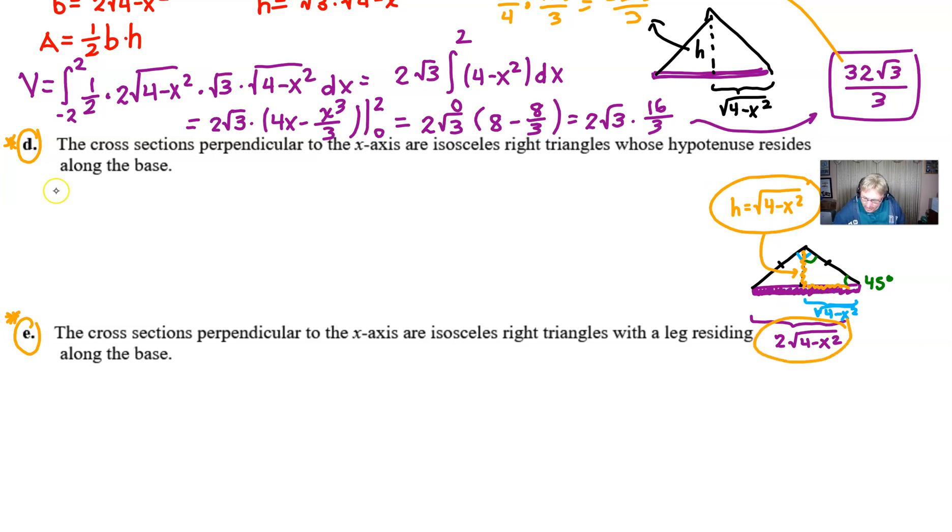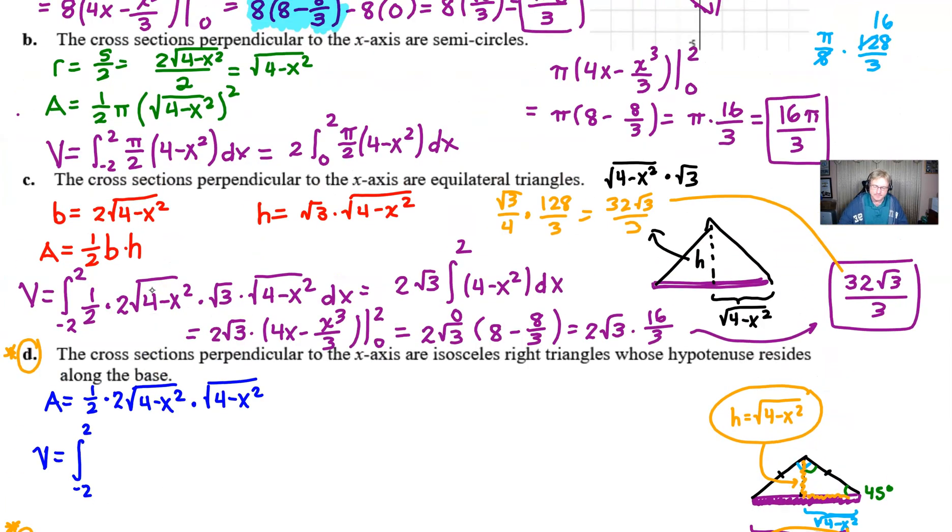So we know that our area is one half times the base times the height. And we're going to take this guy and we are going to integrate it. So to find our volume, we would normally integrate from negative two to two. We're going to talk about that here again.